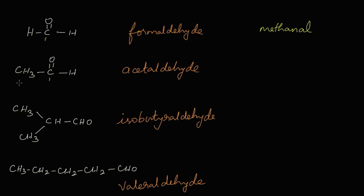For the second structure, there are two carbons, so the base is ethane. Because the functional group is aldehyde, we replace 'e' with AL, giving ethanal. Ethanal is the IUPAC name of acetaldehyde.